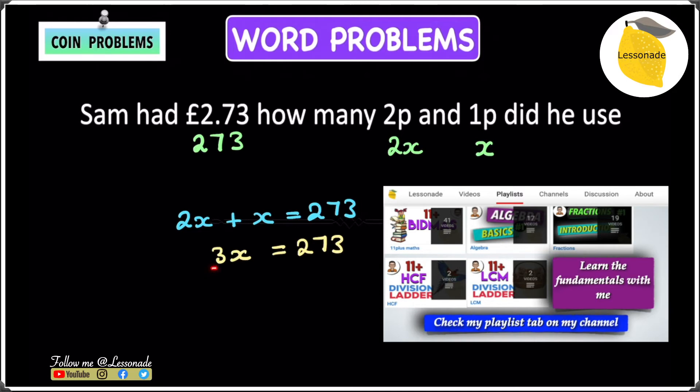And we have to undo this 3 because we keep all of the variables and the letters on one side and all of the numbers on the other. To do this, we have to undo this 3. And in this case, we have 3x, which is the same as 3 times x. To undo this 3, we have to divide by 3.